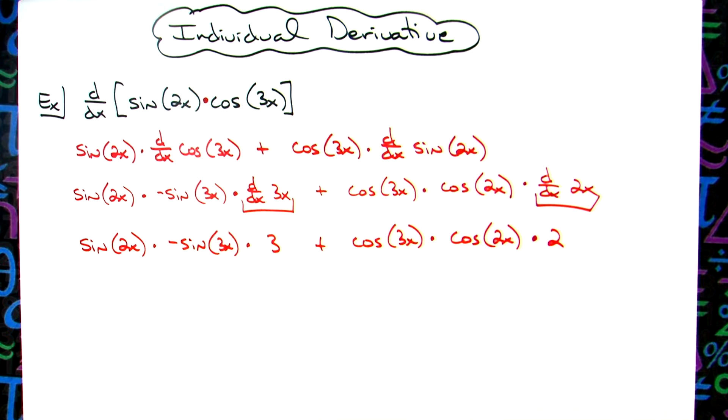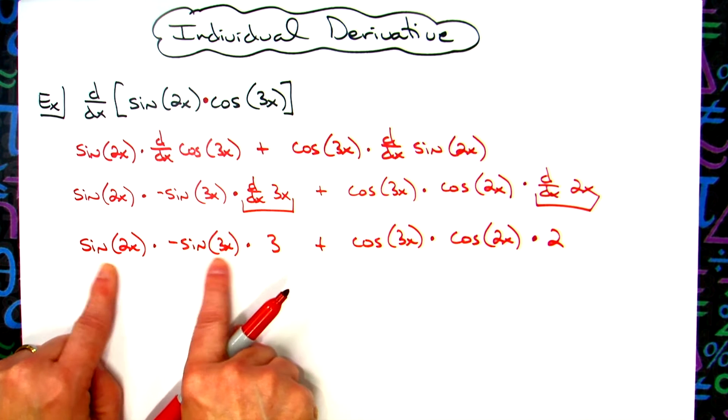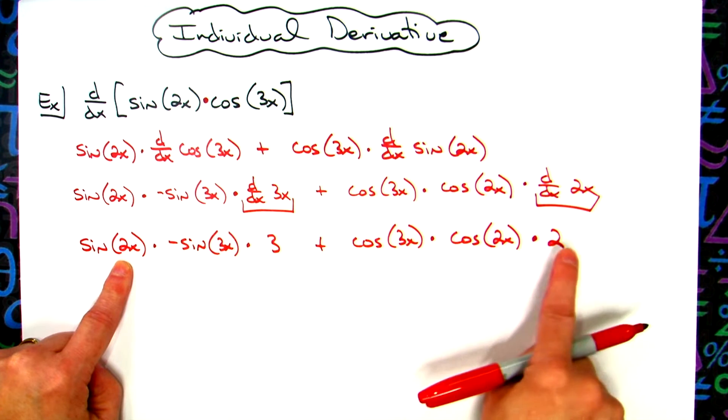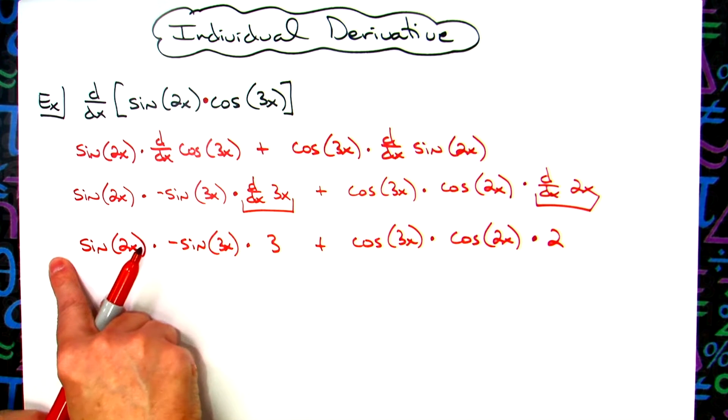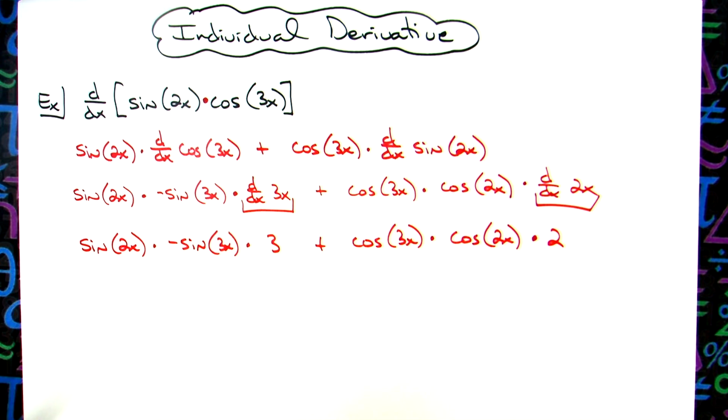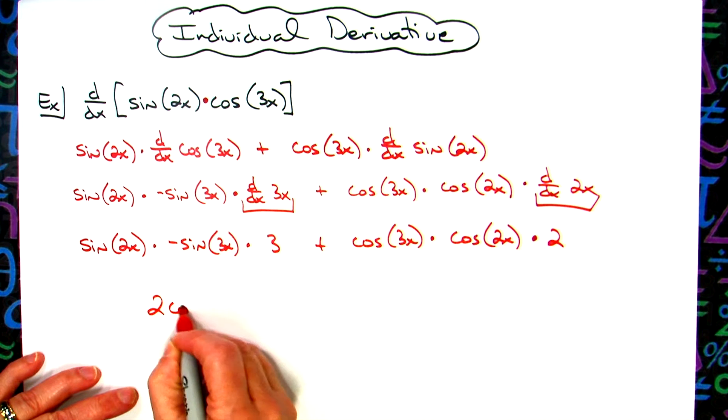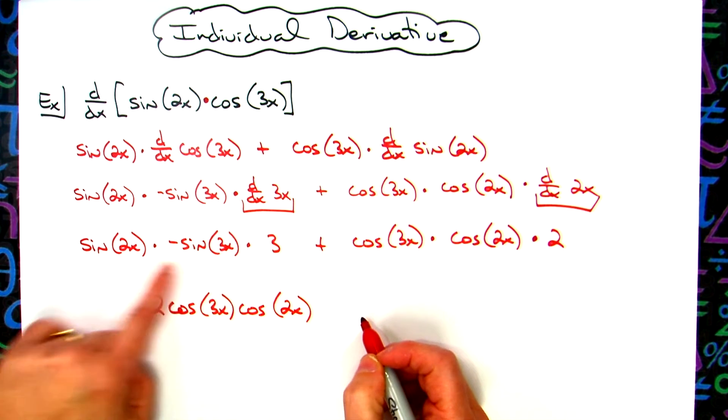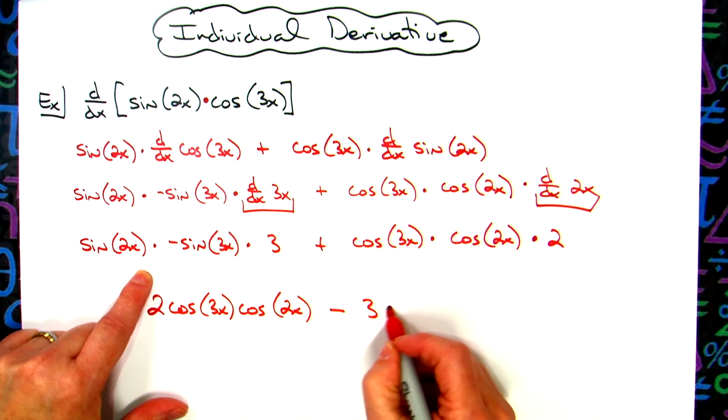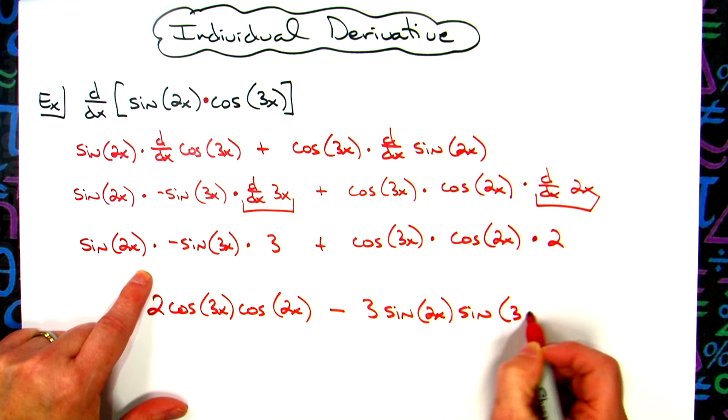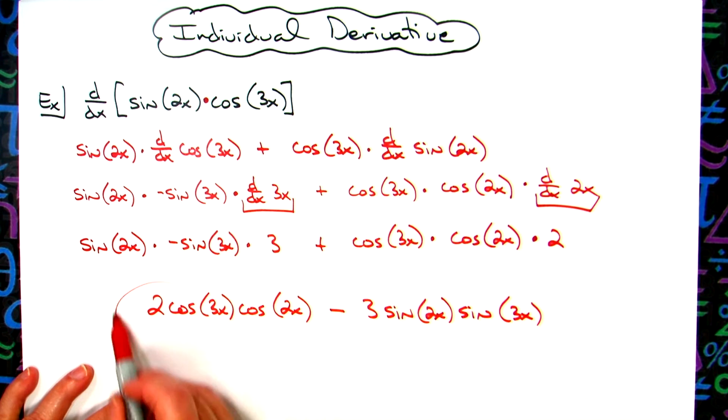Okay, so now really we can't do anything with this because the sine of 2x is different from the sine of 3x. Same thing over here. So about the only thing I can do to clean this up would be to move the 2 in front and possibly, with this being a minus, so that you don't have a leading negative coefficient, it would be okay to write this one first. So we could do like a 2 cosine of 3x cosine of 2x, putting that in front, and then making this just a minus 3 sine 2x and then sine 3x.